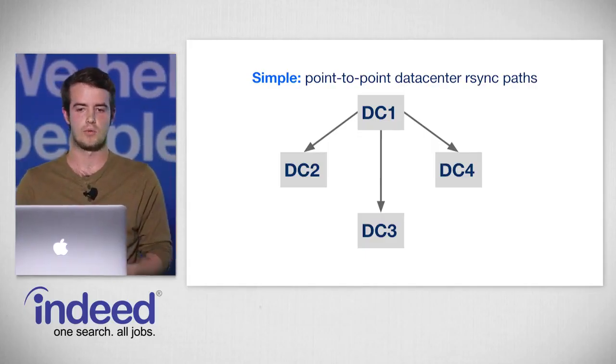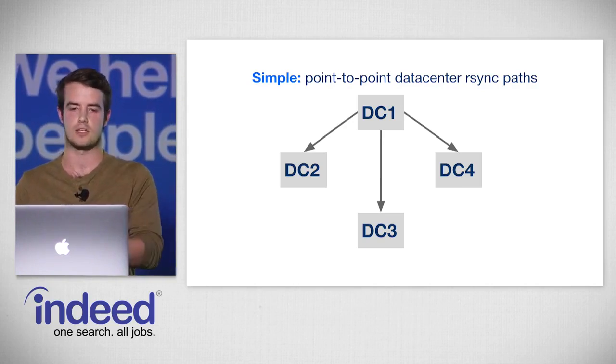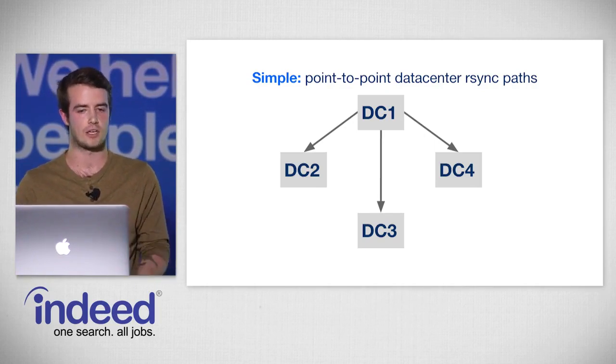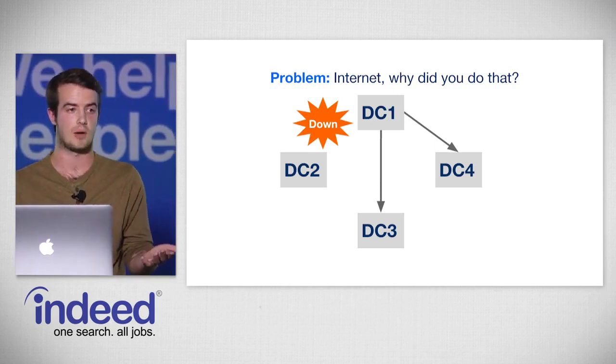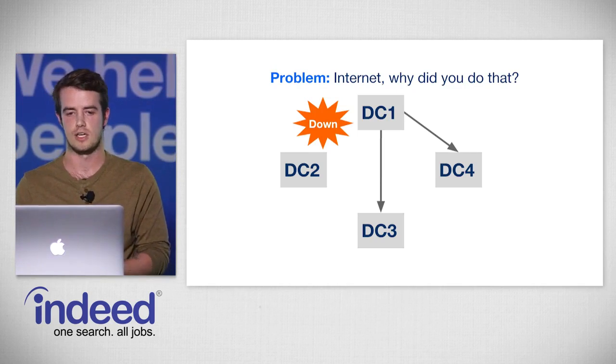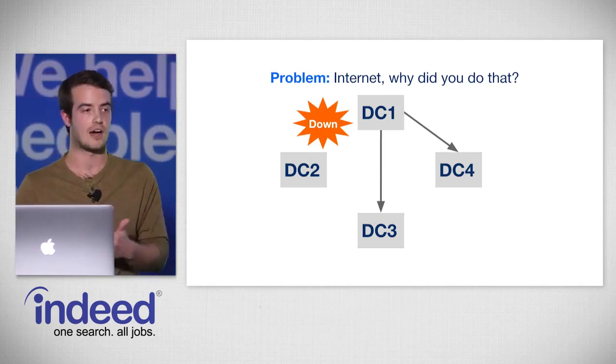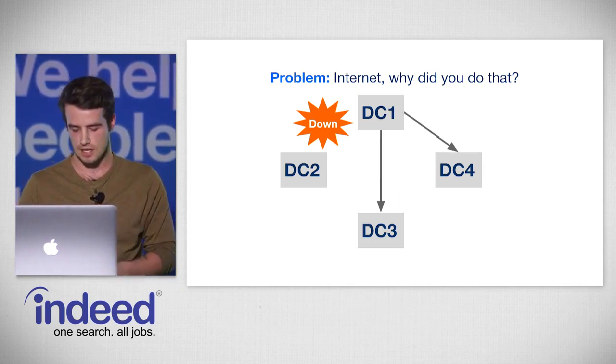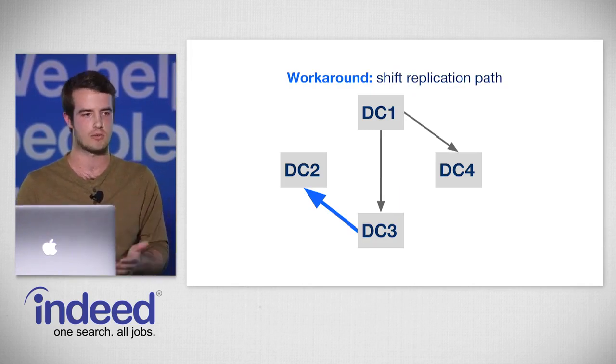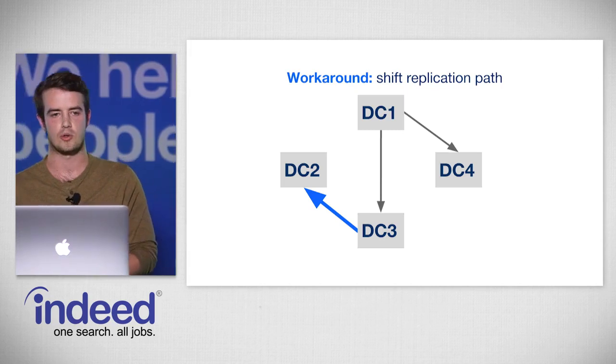Because rsync is point-to-point, we only had one connection between our original data center and each newer data center. Sometimes — at 3am or 5pm on a Saturday when the sysadmin is out to dinner — the link between data centers would go down. The sysadmin would have to manually reconfigure the replication path to take a different route. This was not a very sustainable recovery model.